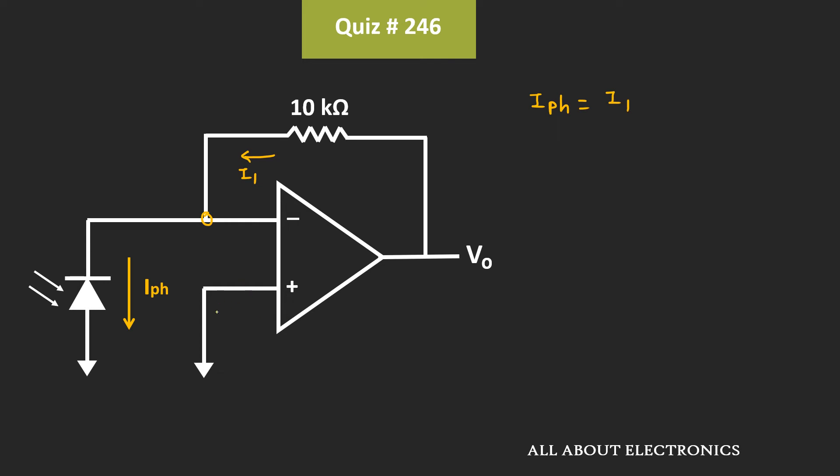And because of the virtual ground, the voltage at this node will be equal to 0V. That means we can say that this photocurrent IpH is equal to V0-0 divided by 10kΩ. That means Vout is equal to IpH times 10kΩ.